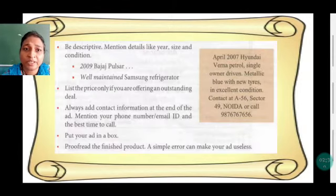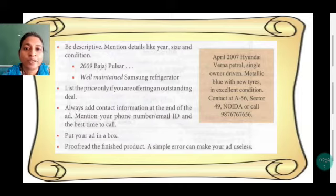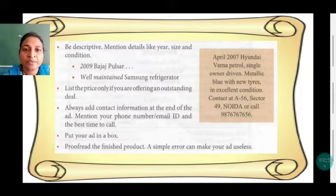Be descriptive — mention details like year, size, and condition. List the price. Always add contact information. Put your ad in a box — very important. Proofread the finished product. Proofread means read it again and see whether your ad is correct. Check for spelling mistakes and rectify all errors before you give it for final printing.